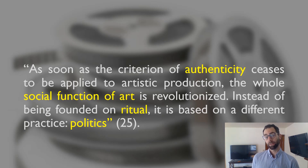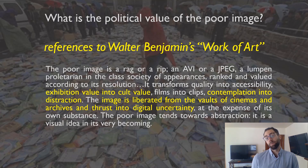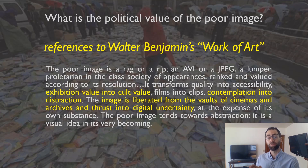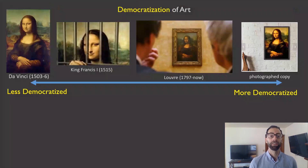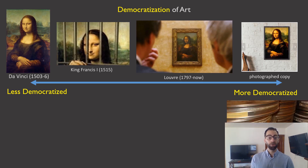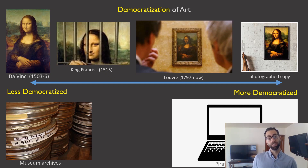Benjamin was very skeptical of placing value in originals and authentic original works. In a very similar way, Steyerl is interested in the possibility of poor images liberating art forms — especially marginalized, non-narrative, or experimental artworks — from their confinement to the cultural elite. We can see a parallel between Benjamin's interest in democratization of art with photography and Steyerl's interest in liberating moving image art from museum archives to pirated copies circulating in digital networks.